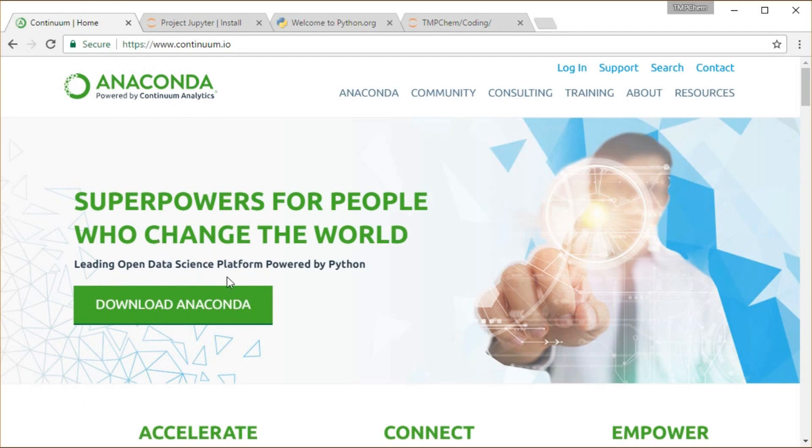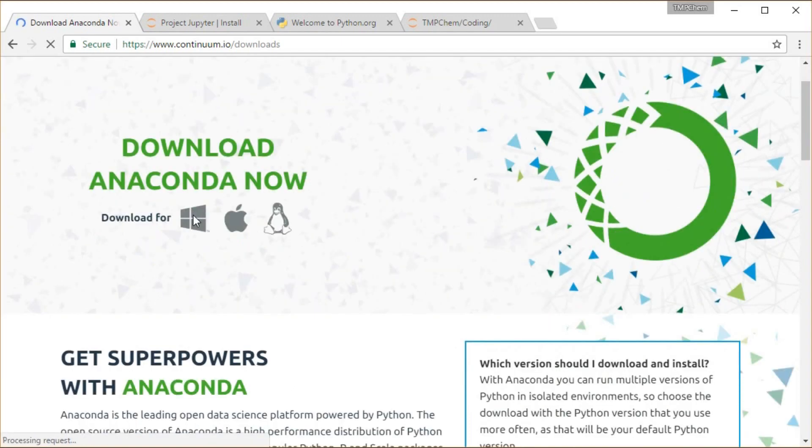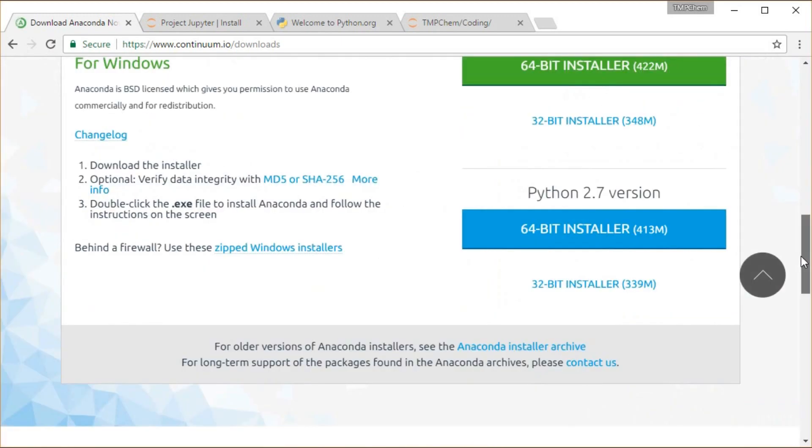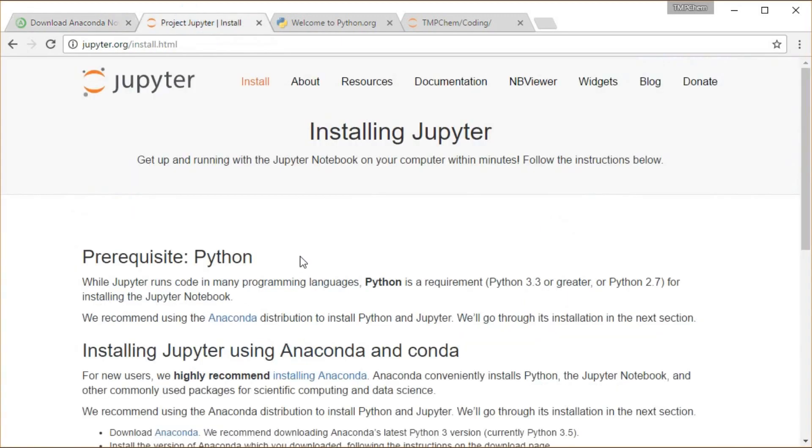So Continuum.io. We'd have download Anaconda from their website, and I assume they got some platform-specific types of downloads here. Yep, download for Windows, Mac, Linux. And specifically, I'm going to request that you download Python 3, the Python 3 version, because that's the version that I'm going to be using in these demos. Previously, I was using Python 2 in the last version of these notes. I have since upgraded and have been using Python 3 for everything. So to be compatible with what I'm doing, you're going to need to install the Python 3 version.